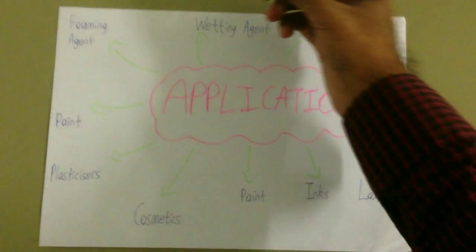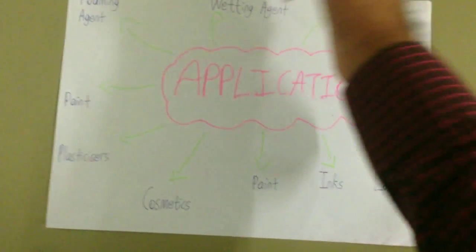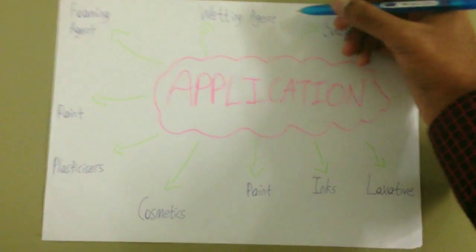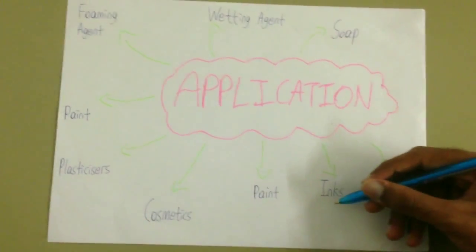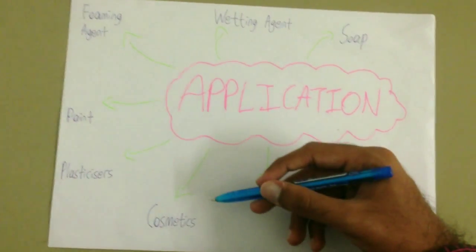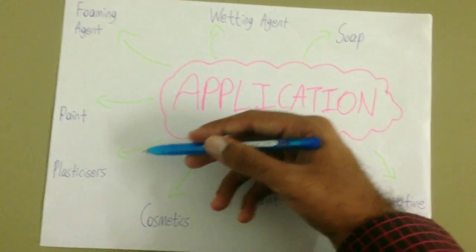There are many types of application of a surfactant such as foaming agent, wetting agent, soap, laxative, inks, paint, cosmetics, plasticizers and paint.